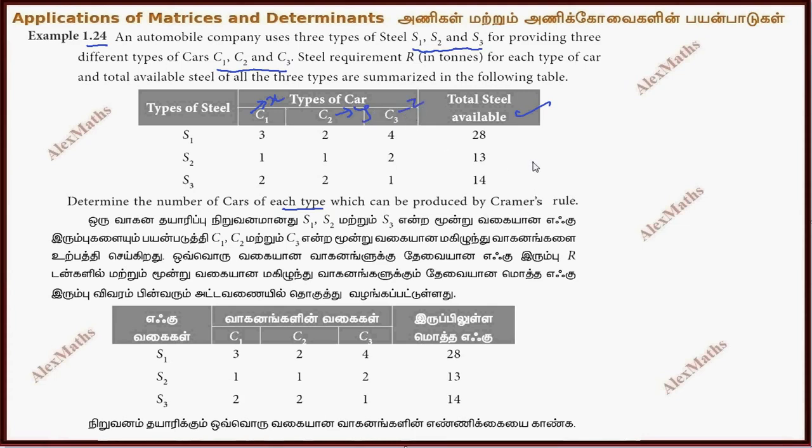Now let's look at the equation. First equation is 3x plus 2y plus 4z equals 28. Second equation is x plus y plus 2z equals 13. Third equation is 2x plus 2y plus z equal to 14. This is a system of 3 equations.